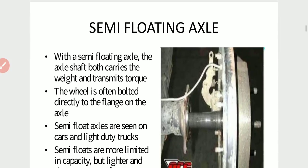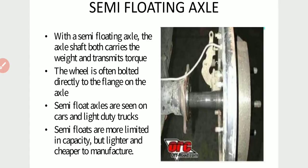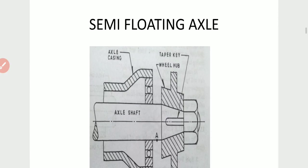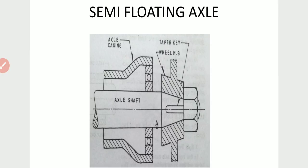With a semi-floating axle, the axle shaft both carries the weight and transmits the torque. The wheel is often bolted directly to the flange on the axle. Semi-floating axles are seen on cars and light duty trucks. Semi-floating axles are more limited in capacity but lighter and cheaper to manufacture. This is the diagram of a semi-floating axle.